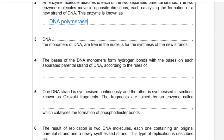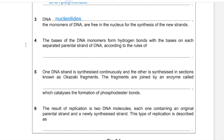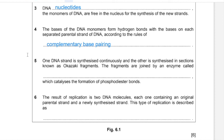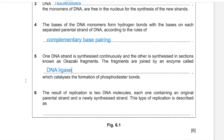Step 3: The monomers of DNA are DNA nucleotides. Step 4: The bases of the DNA monomers form hydrogen bonds with the bases on each separated parental strand according to the rules of complementary base pairing, because hydrogen bonds only form between complementary bases. Step 5: One strand is synthesized continuously and the other is synthesized in sections known as Okazaki fragments. The fragments are joined by an enzyme — DNA ligase — which catalyzes the formation of phosphodiester bonds. Step 6: The result of replication is two DNA molecules, each containing an original parental strand and a new synthesized strand. This is described as semi-conservative replication.